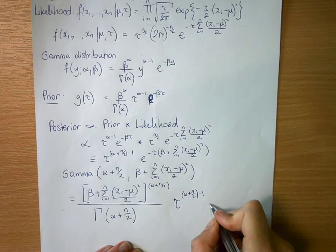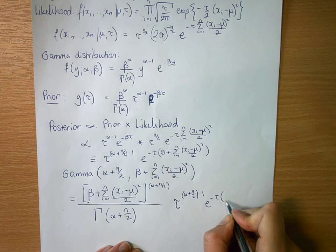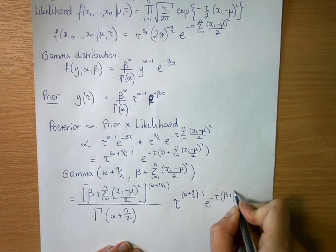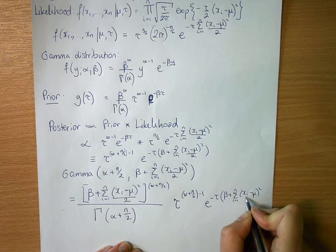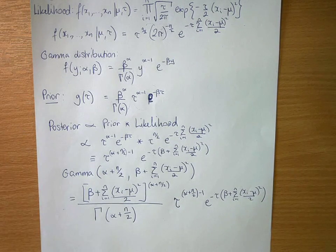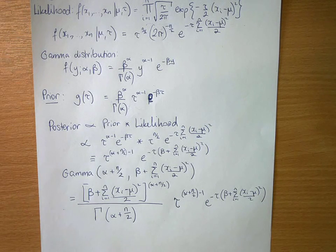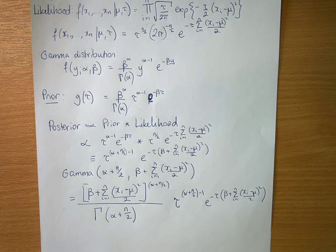...e^(-τ[β + Σ(xᵢ-μ)²/2]). And that shows that your gamma distribution is your conjugate prior for a precision from a normal distribution if you have a known mean mu.